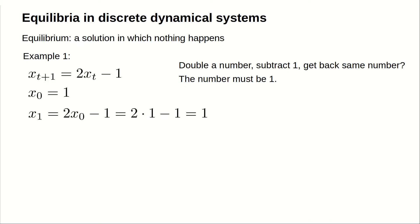To be an equilibrium, x sub t has to stay at 1 forever. Will x sub 2 also be 1? Plugging in x sub 1 equals 1 to the formula for x sub 2 gives the same calculation, showing that x sub 2 stays at 1.